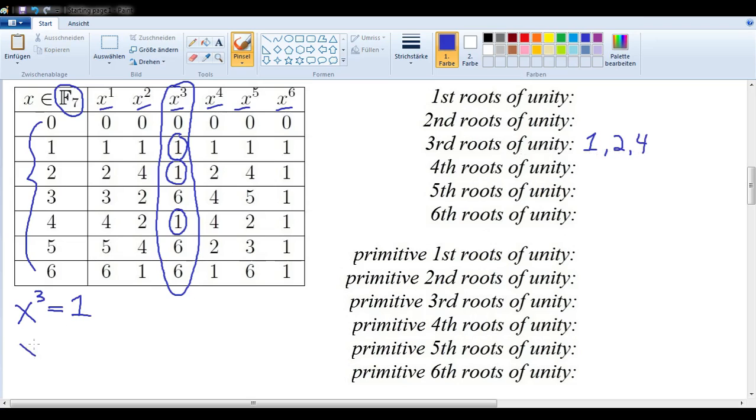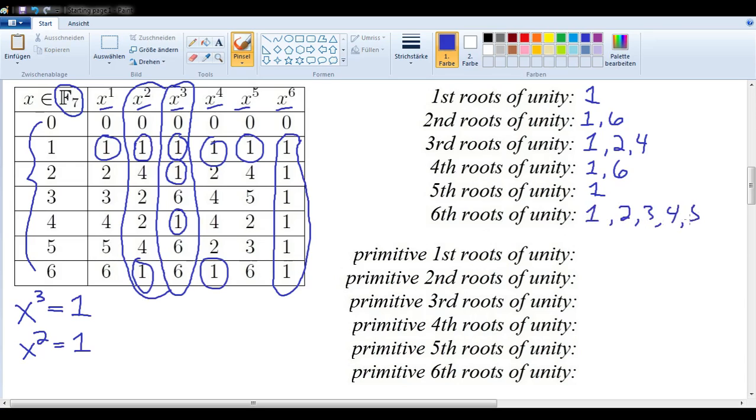So, let's move on to the second roots of unity. X squared is equal to 1 is satisfied by X is equal to 1 or X is equal to 6, just by looking at the second column. So, we have here 1 and 6. Now, the first root of unity would be 1 alone. And if we continue in this vein, then the fourth roots of unity would be 1 and 6. The fifth roots would be just 1. And the sixth roots of unity would be all non-zero elements: 1, 2, 3, 4, 5, and 6.